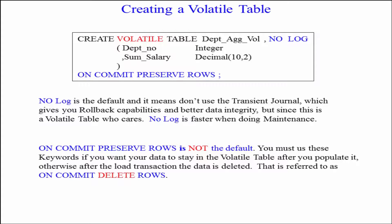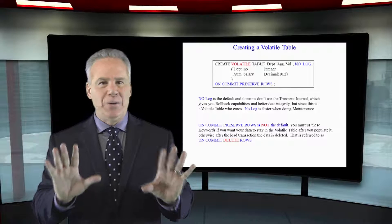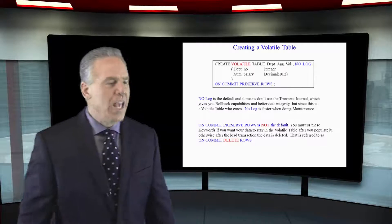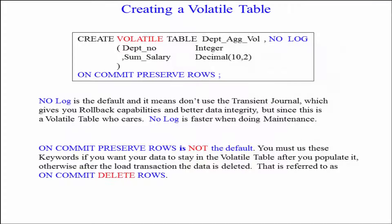It says don't be putting a transient journal on this. I don't plan on doing any rollbacks. If something happens during the system I'll rebuild this later. And then I list my two column names Dept_no and Sum_Salary and their data types.